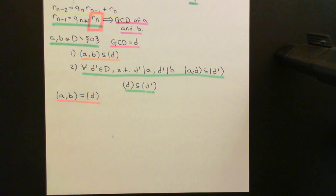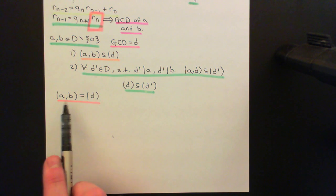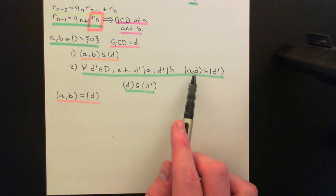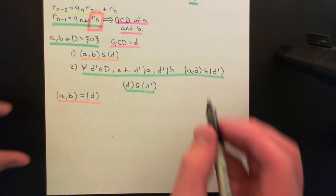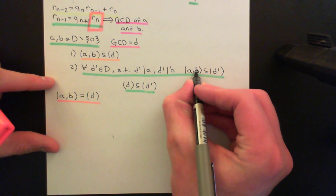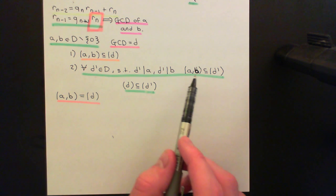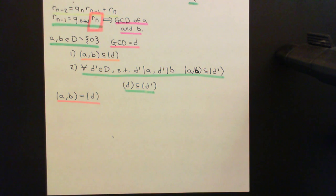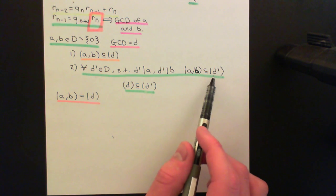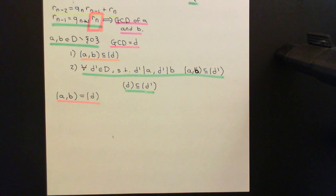Why does D satisfy the greatest condition? If you have any other common divisor of both A and B, the ideal generated by that other common divisor must contain the ideal generated by A and B. And since that's equal to the ideal generated by D, any other common divisor's principal ideal will have to contain the ideal generated by D. So D does indeed satisfy the greatest condition and will always be a greatest common divisor.